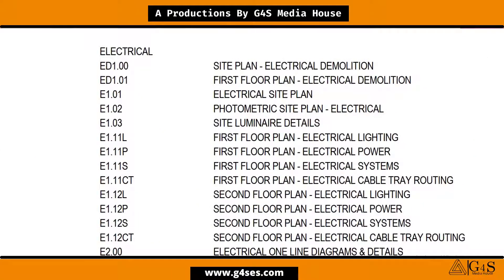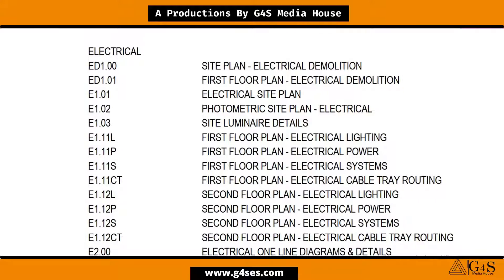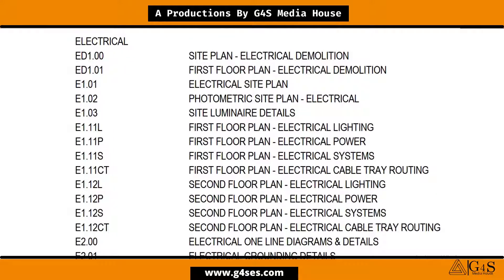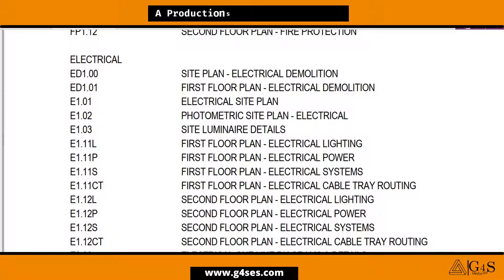The first electrical drawing is numbered ED 1.00, and its title says Site Plan Electrical Demolition — this is the drawing where demolition of site electrical work will be shown. The second drawing is numbered ED 1.01 and its title says First Floor Plan Electrical Demolition, where electrical demolition for the first floor will be shown.